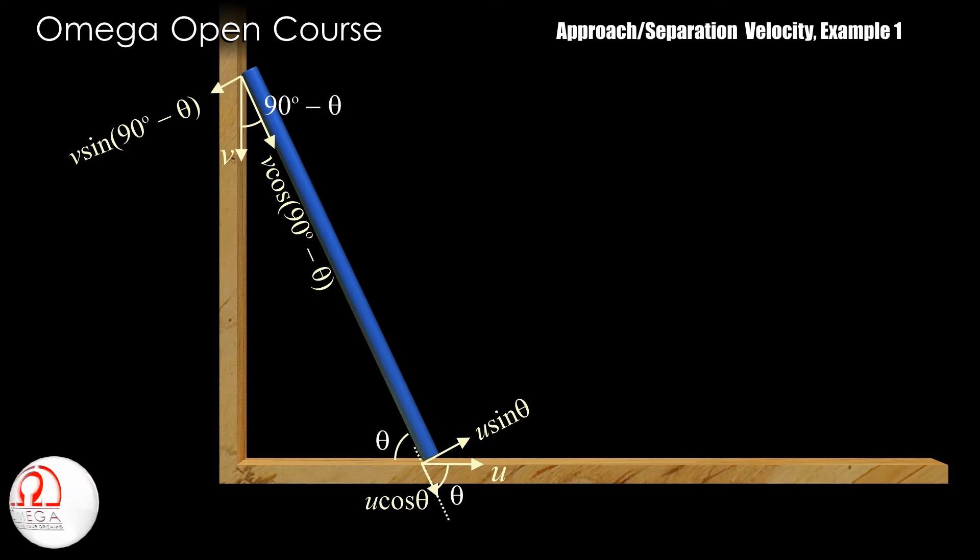Now since the length of the rod is fixed, the distance between the two ends of the rod must be constant or their approach or separation speeds must be zero. This means the lower end must be moving away from the upper end with the same rate as the upper end is moving closer to the lower end.